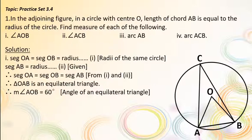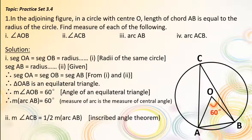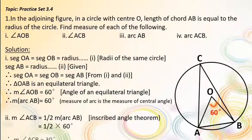Second, the measure of an arc is the measure of the central angle. Therefore, measure of arc AB = 60°. By the inscribed angle theorem, measure of angle ACB = half of measure of arc AB = half of 60°. Therefore, measure of angle ACB = 30°.